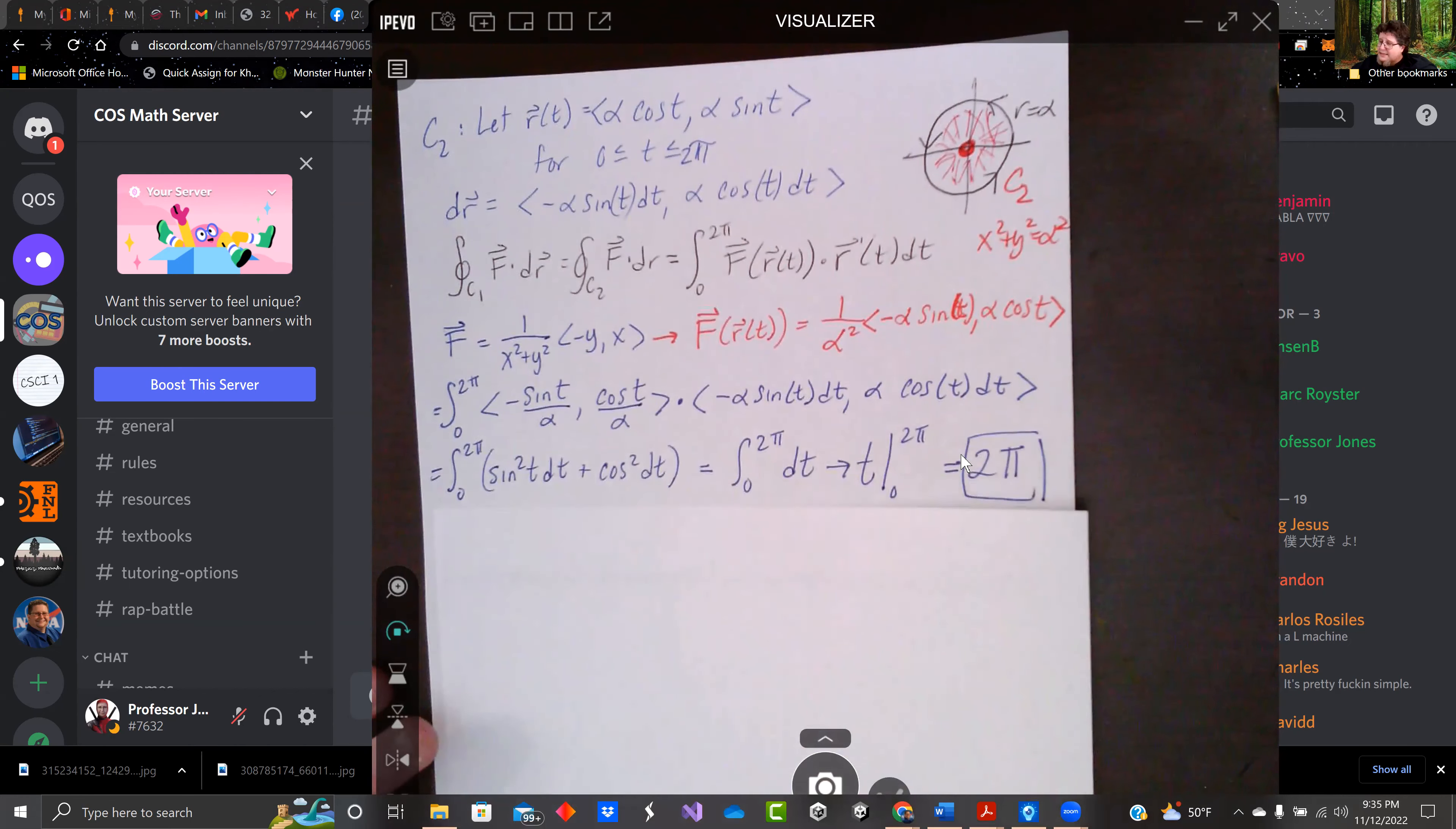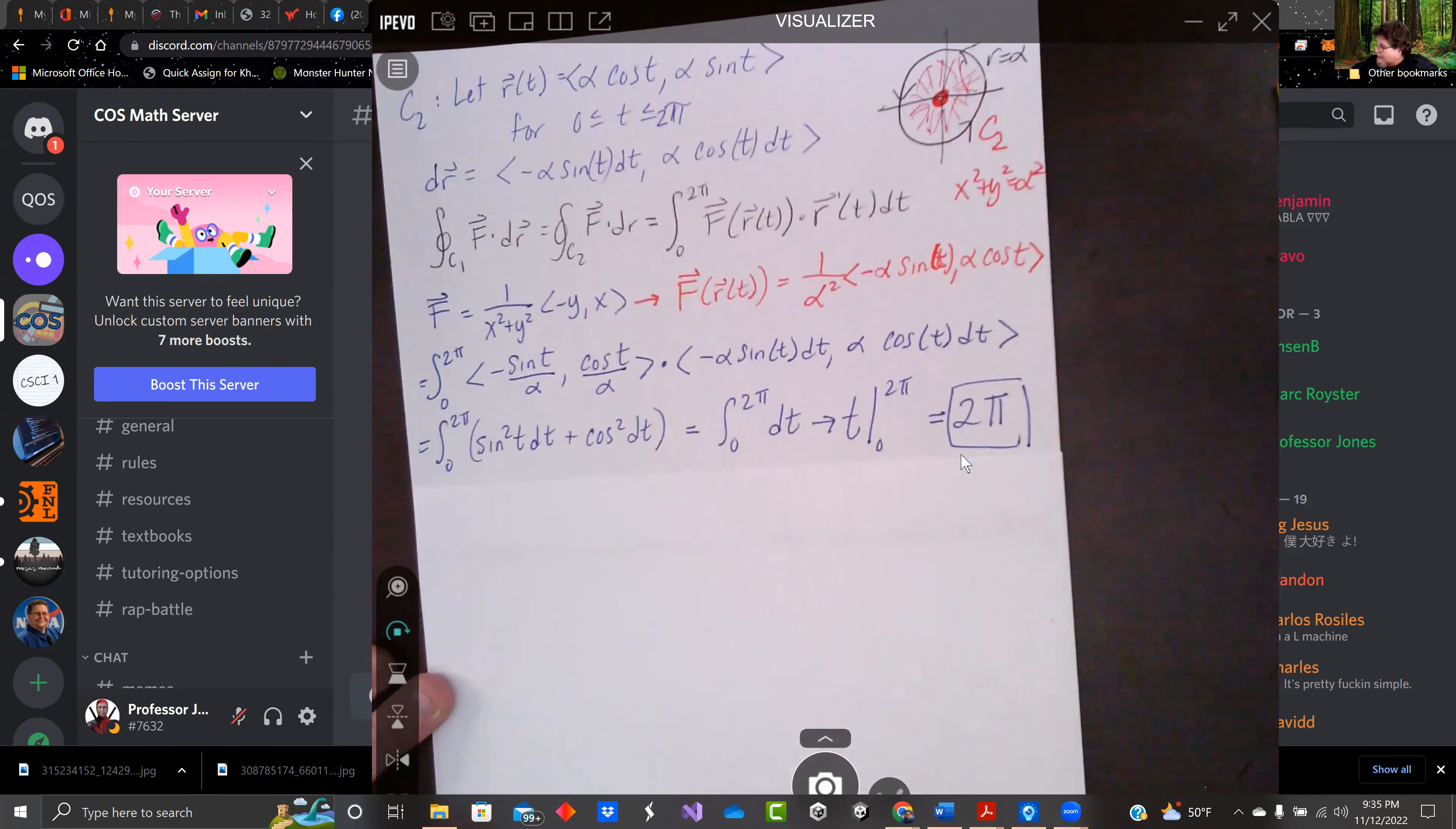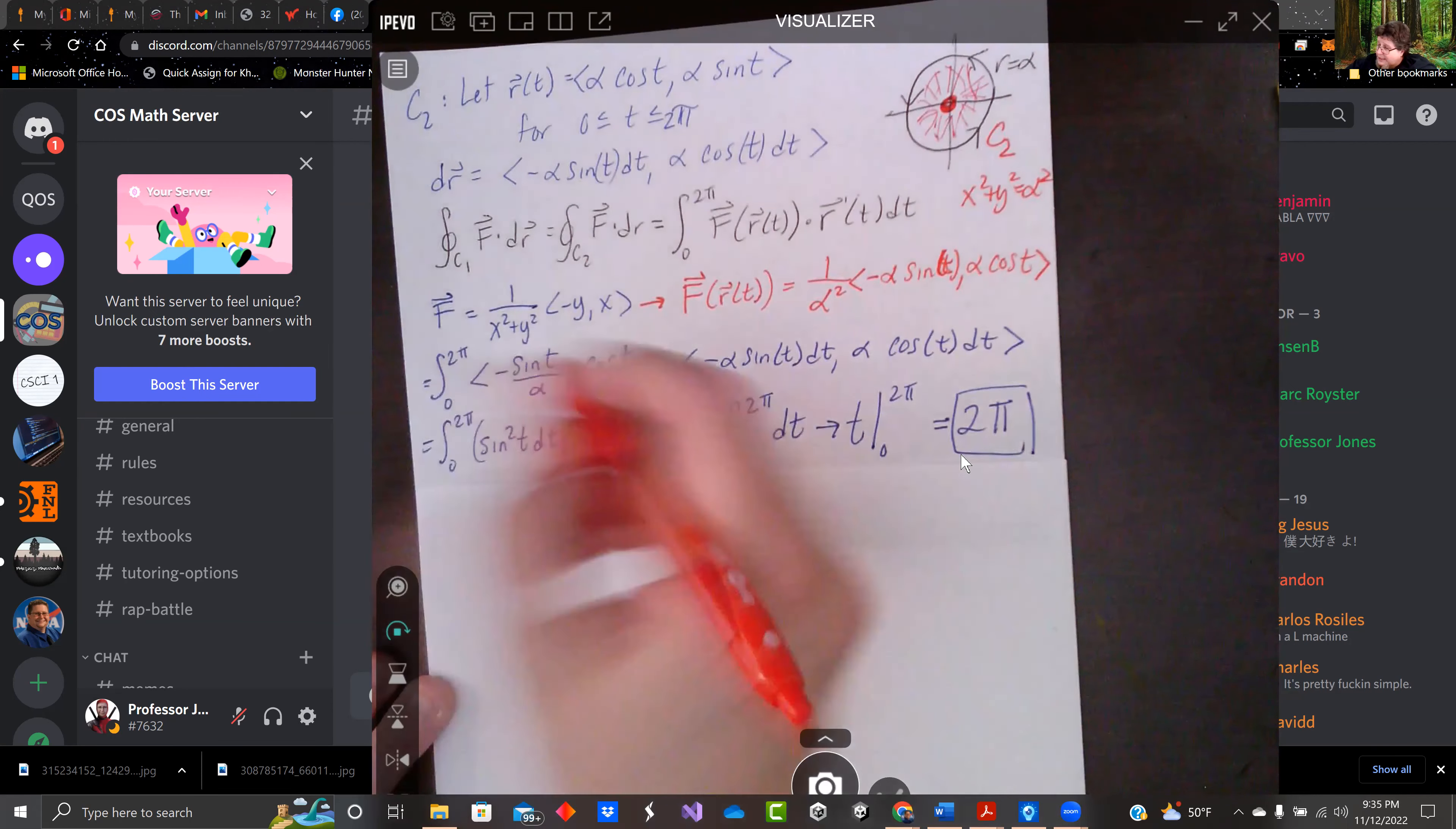So when we do the dot product of f dotted with dr, we have that. And you will see that gets us sine squared t dt plus cosine squared dt. We're evaluating that from zero to 2π. I don't have a t in there. I'm missing a t. Let's put it in.